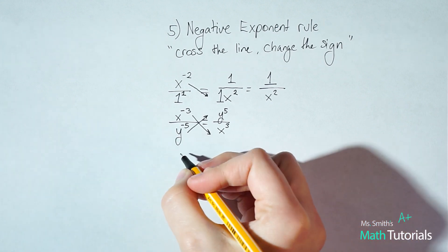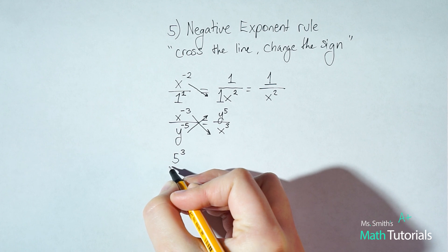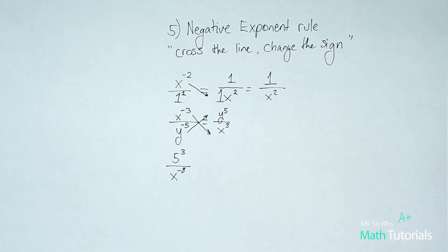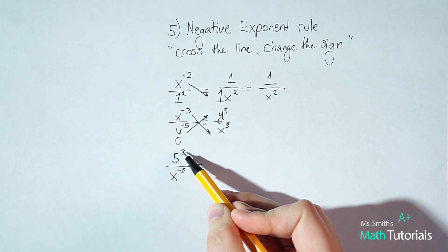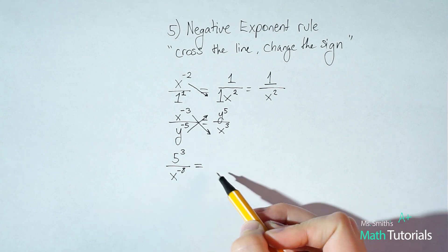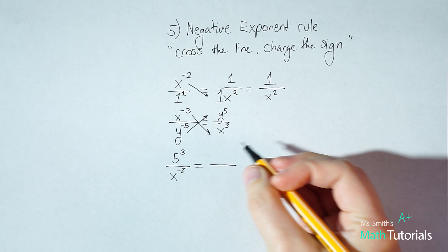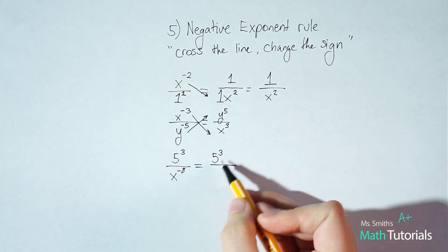So the next example, we could have a whole number up top. So let's say five cubed over x to the negative eight. It doesn't matter. Our rules still apply. In this case, notice this five has a positive exponent of three. So we do not need to cross the line, change the sign with this five cubed. Rather, it stays up top. It stays right where it is.